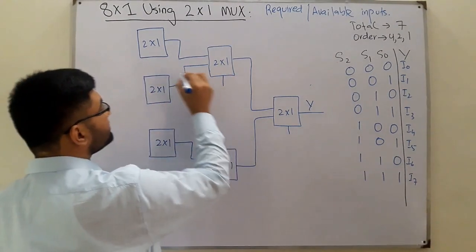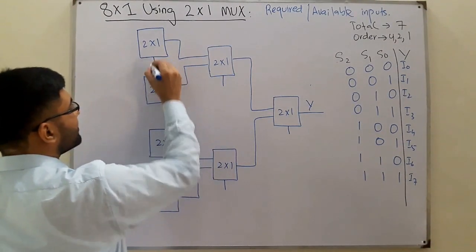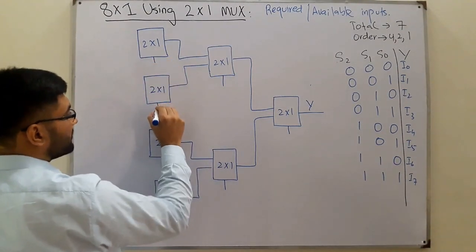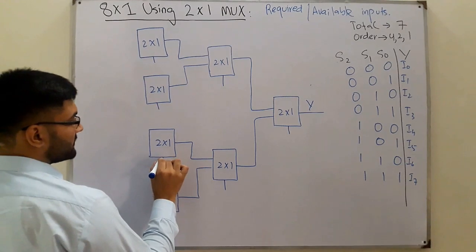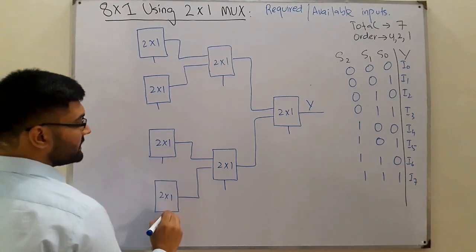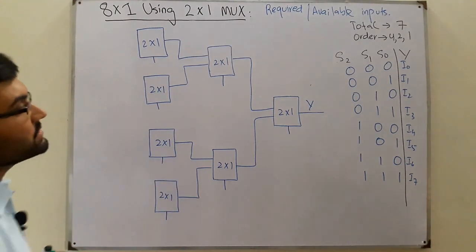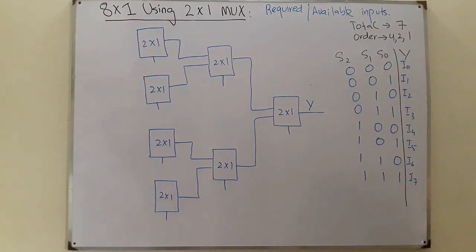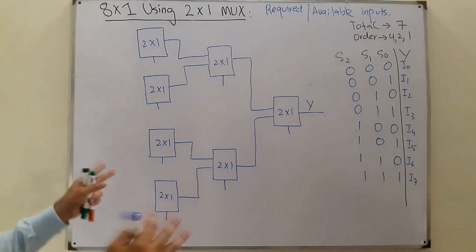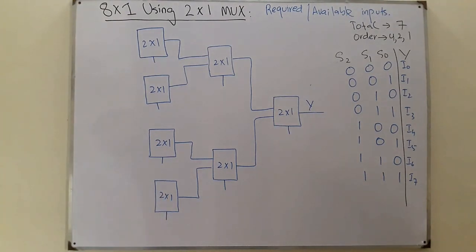Each of the 2x1 muxes will have a single select line, but we need 3 select lines in total: S2, S1, and S0. Which select line goes to which mux?